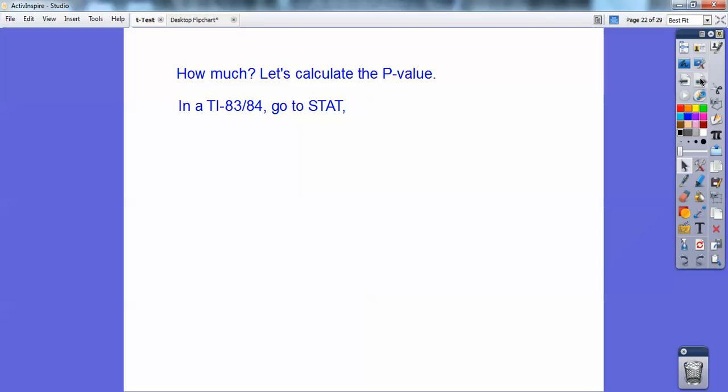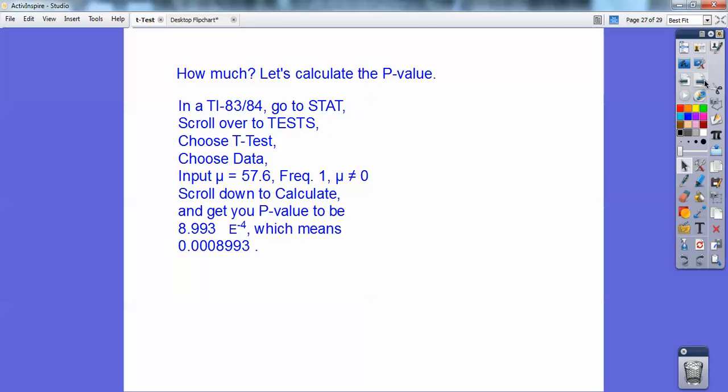In your calculator, go to stat, then scroll over to test. Choose a T test, then hit data. Input the mean that they gave us, 57.6, and frequency is 1. We're doing a two-tail, so make sure you highlight it's not equal to 0. Scroll down to calculate. You get a p-value to be 8.993 e to the negative 4. That means exponent times 10 to the negative 4, which means move this decimal to the left four places. This is my p-value, 0.0008993.